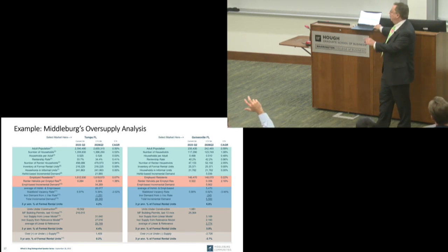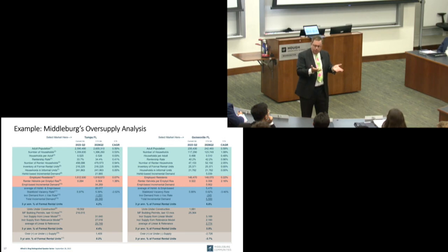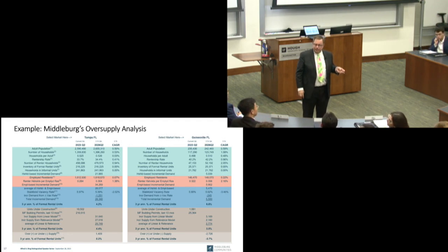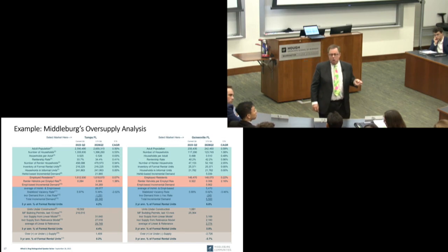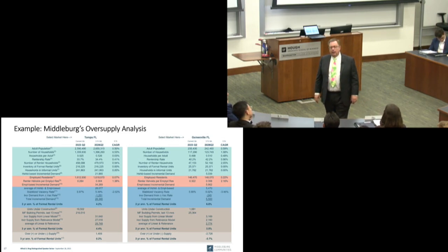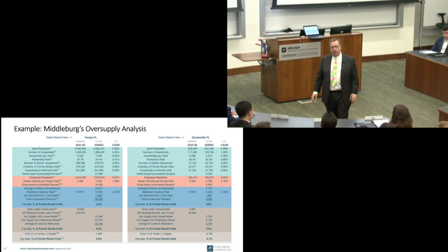Anna asks: is the oversupply/undersupply analysis for your specific product or rental units in general? It's all formal rental units in general. Student housing should ideally be excluded, but I haven't yet found a way I think is good enough to exclude either student housing or elderly housing. So I do it for all rental housing, and separately I evaluate whether this is really a student market or an elderly market.